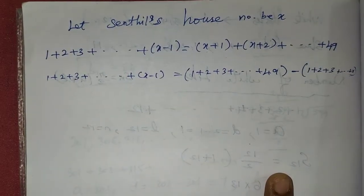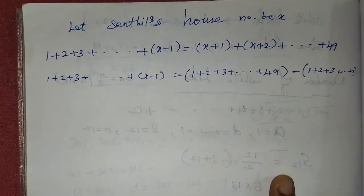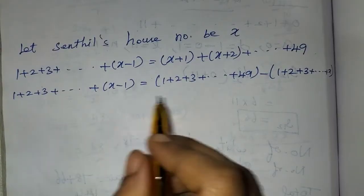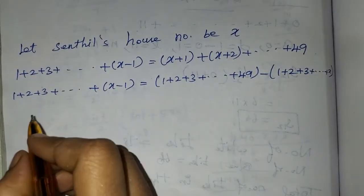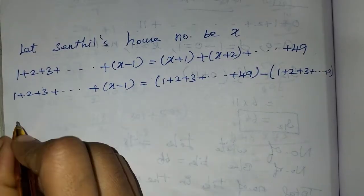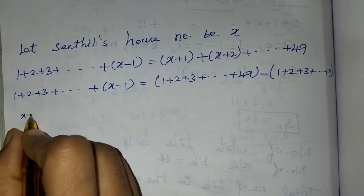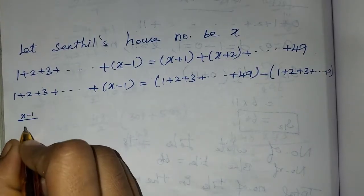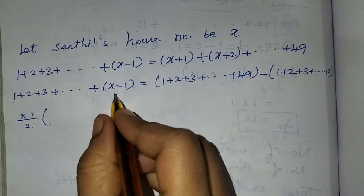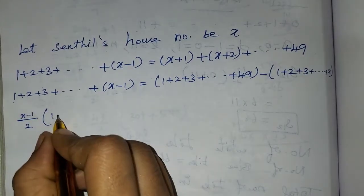We apply the arithmetic series sum formula: n divided by 2 times (a plus L), where a is the first term and L is the last term. For the left side, n equals (x minus 1), so we get (x minus 1) divided by 2 times (1 plus x minus 1).